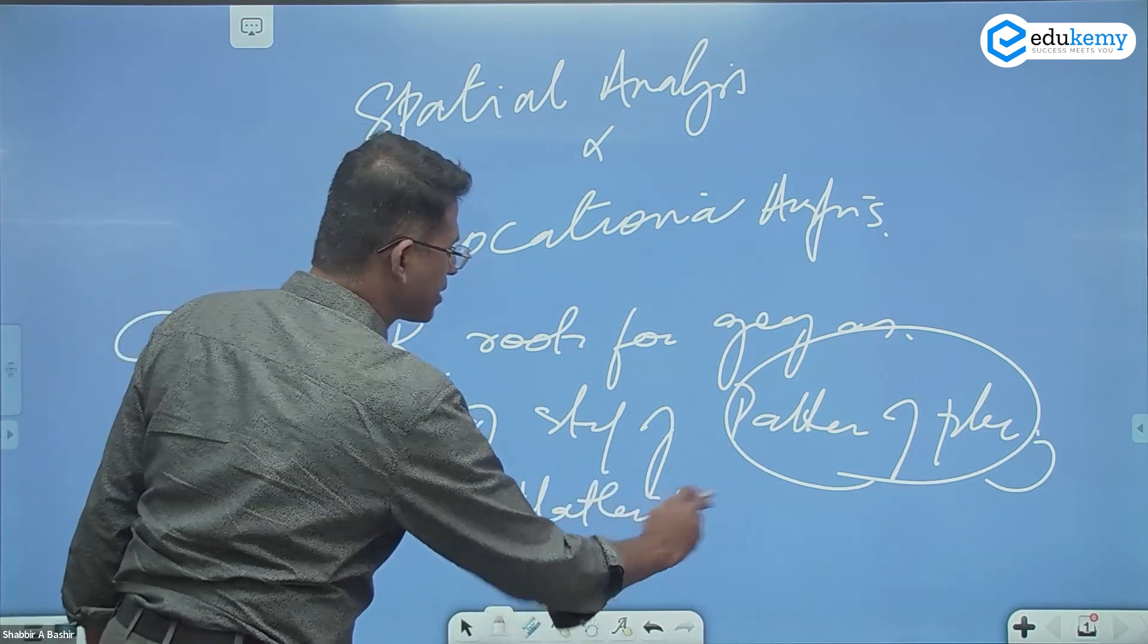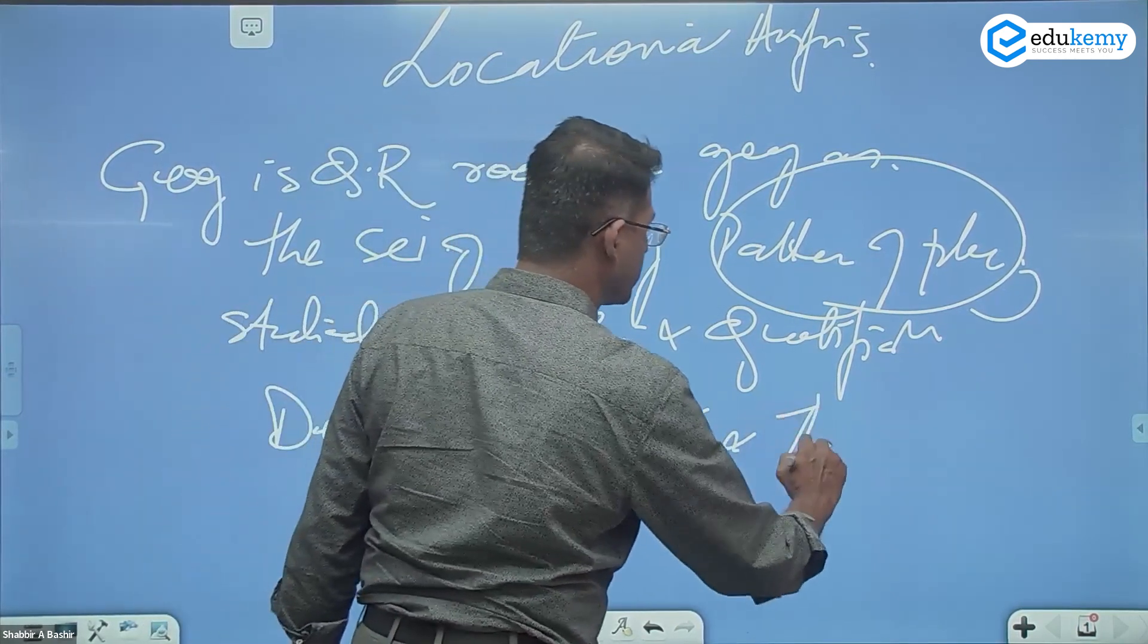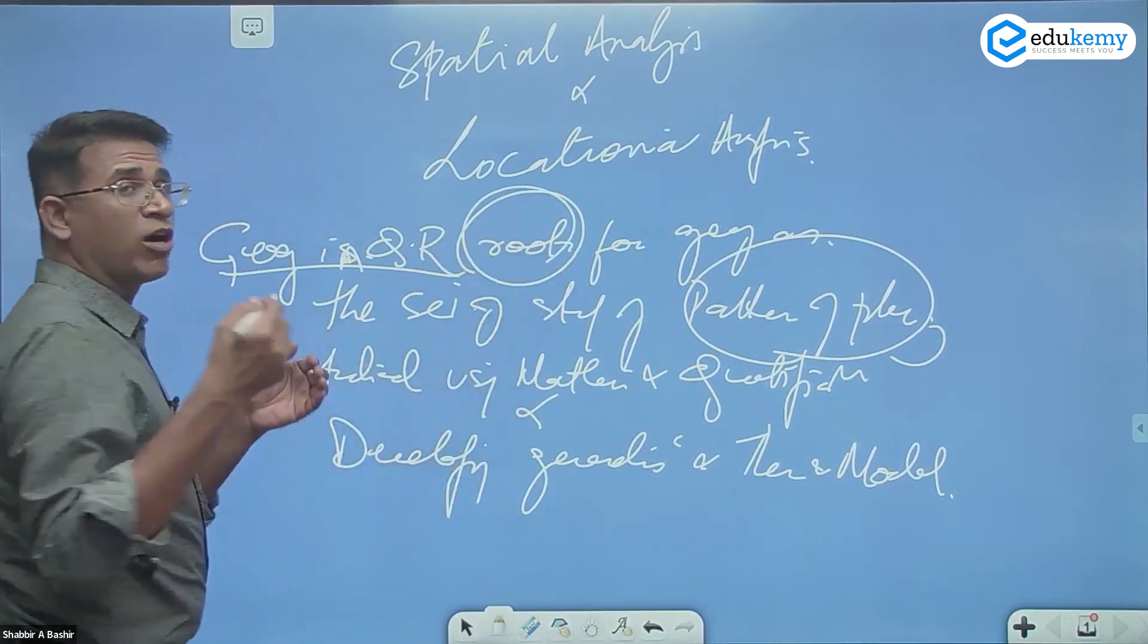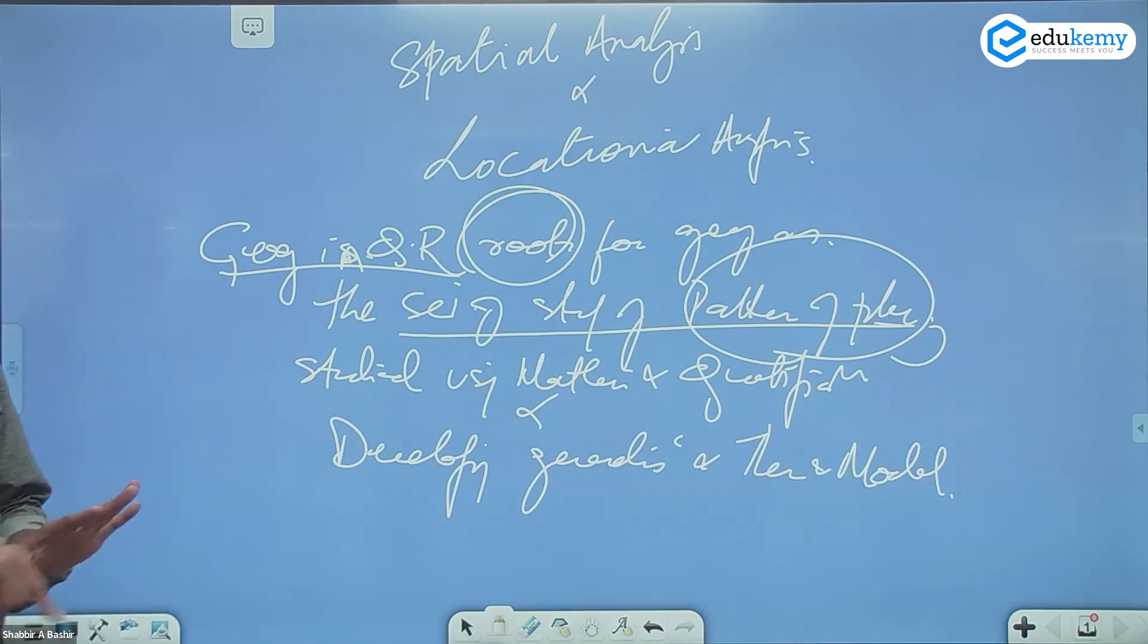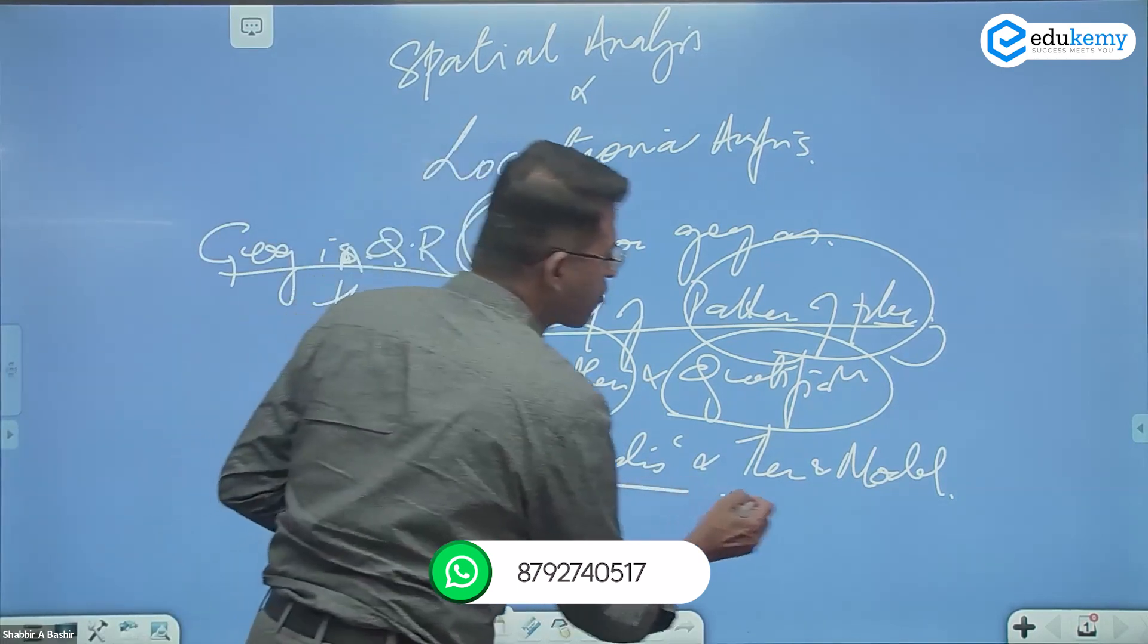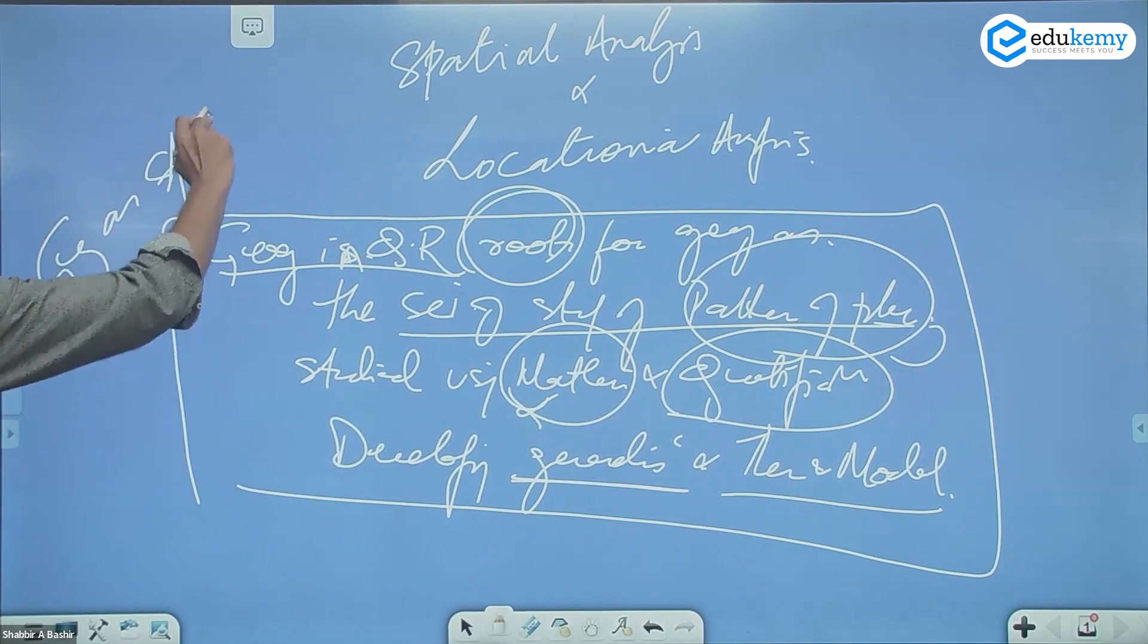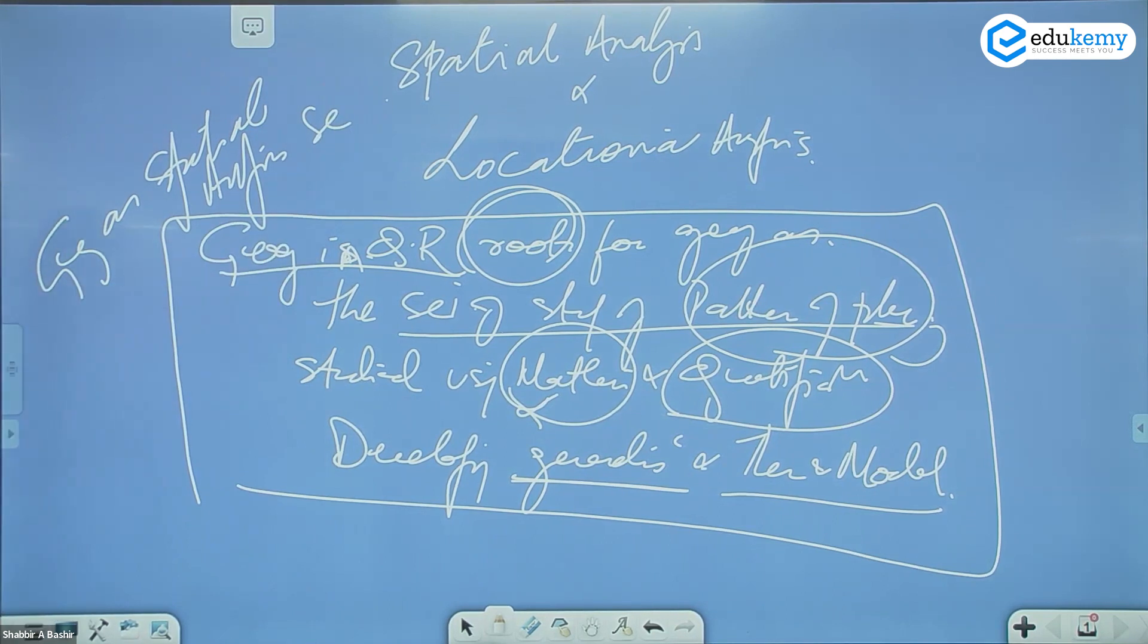Developing generalizations, theories and models. Geography in QR roots for geography as a science of study of patterns, and to study the patterns we have to use mathematics and quantification and use the understanding to develop generalizations and models. Geography as a spatial analysis science, so in QR, geography is becoming the science of space.